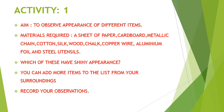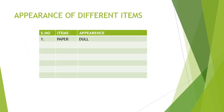Now my question is: which of these have a shiny appearance? You can add more items to the list from your surroundings. Then record your observations. For example, if you are taking paper, make a table with columns — write serial number 1, then item: paper. The appearance of paper is dull.